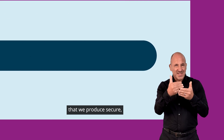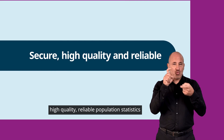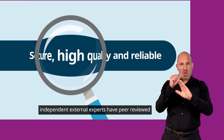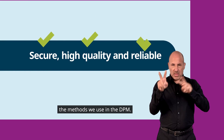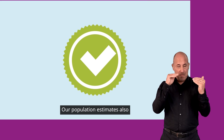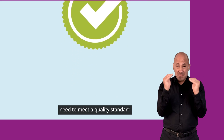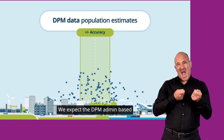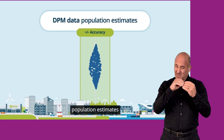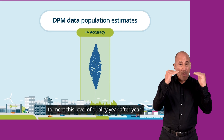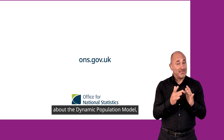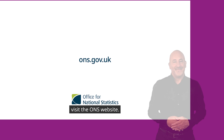To make sure that we produce secure, high quality, reliable population statistics, independent external experts have peer reviewed the methods we use in the DPM. Our population estimates also need to meet a quality standard that is close to the level delivered in census years. We expect the DPM admin-based population estimates to meet this level of quality year after year. To find out more about the Dynamic Population Model, visit the ONS website.